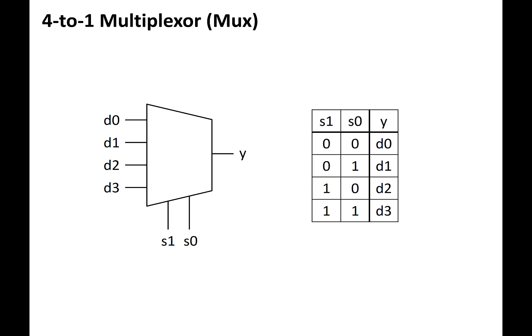A multiplexer is the opposite of a demultiplexer. It has four data inputs, D0 through D3, and two select lines S1, S0, and a single output Y. Depending upon the value of the two select lines, the value of one of the data inputs will be routed to Y. For example, if S1 and S0 are 1 and 0 respectively, then the output Y will take on the value of D2.